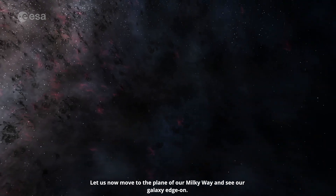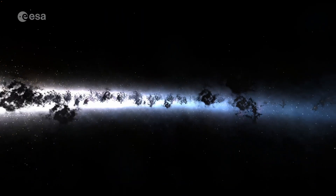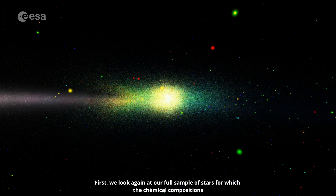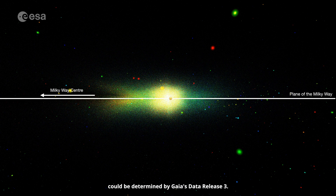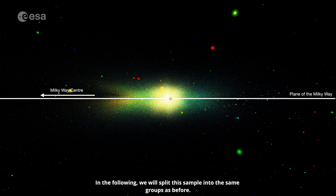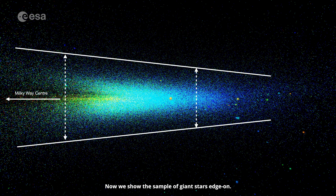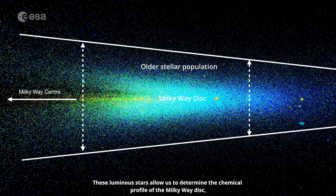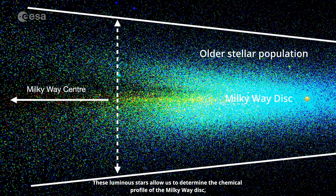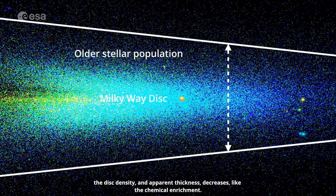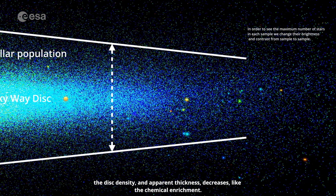Let us now move to the plane of our Milky Way and see our galaxy edge on. First, we look again at our full sample of stars for which the chemical compositions could be determined by Gaia Data Release 3. Now we show the sample of giant stars edge on. These luminous stars allow us to determine the chemical profile of the Milky Way disk, including its older stellar populations, far from the galactic plane. As we move outwards from the galactic centre, the disk density and apparent thickness decreases, like the chemical enrichment.